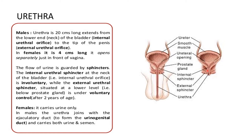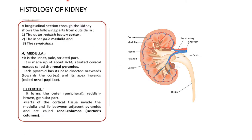The urinary bladder opens into the urethra. It is short in females — almost 4 cm — and long in males — about 20 cm. The flow of urine is guarded by sphincters which act as opening and closing valves. It is under voluntary control. In females the urethra carries only urine, while in males it also carries semen.